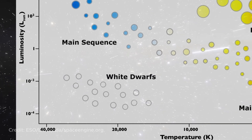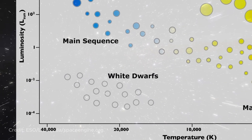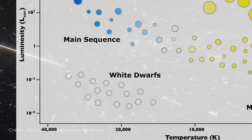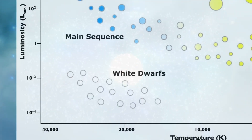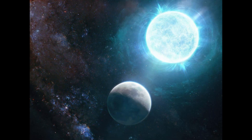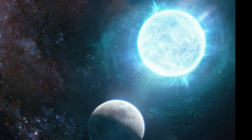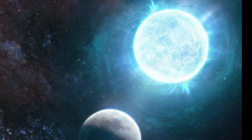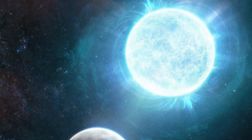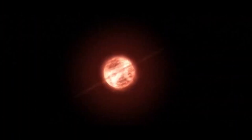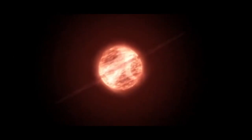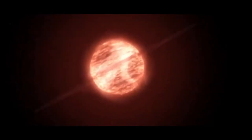White dwarfs are located at the lower left — very dense and compact stars, on average 100 times smaller than the Sun, with a diameter sometimes comparable to that of our planet. A little below are brown dwarfs, and the star we will talk about further belongs to this category.